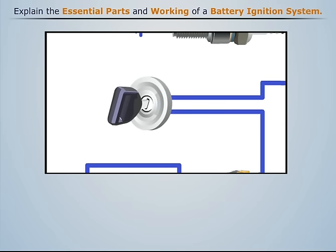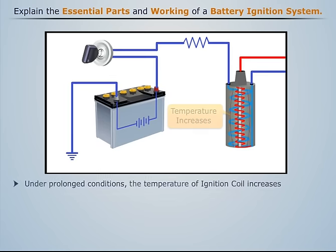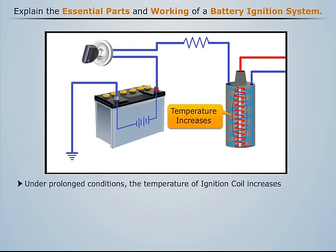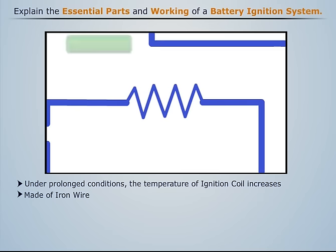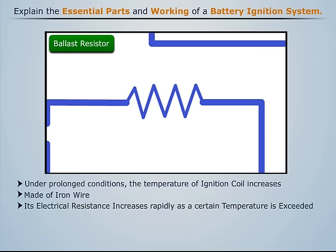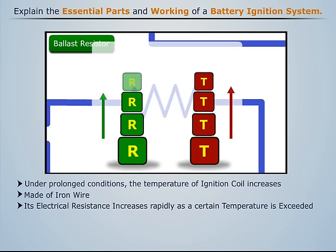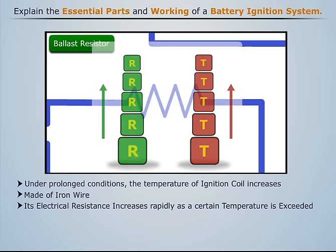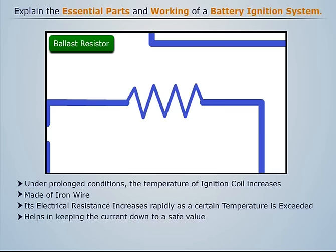Under prolonged operation of the engine, the temperature of the ignition coil increases, which can be dangerous. To prevent this, a ballast resistor made up of iron wire is provided in series with the primary winding. Iron has a property that its resistance increases rapidly if a certain temperature is exceeded. Thus, the ballast resistor helps to keep the current down to a safe value.